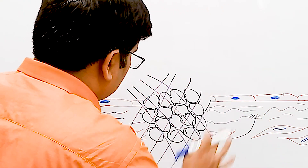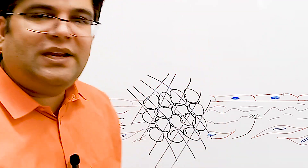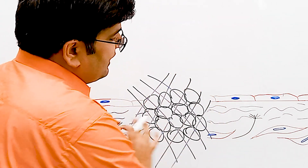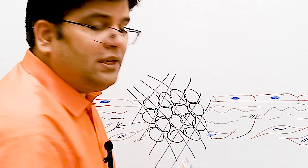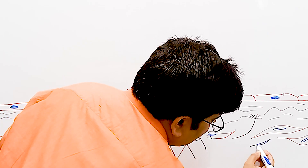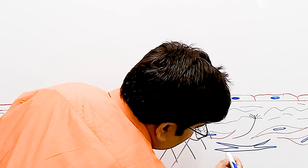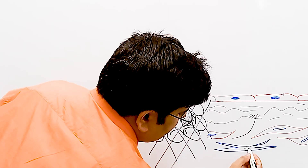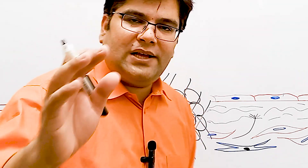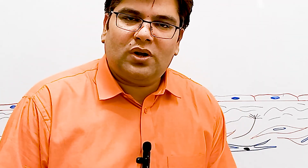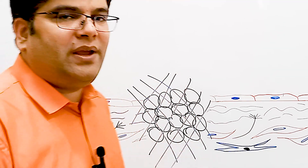It is important to note that this clot is not a permanent process to stop bleeding — it's a transient mechanism until the vessel has repaired itself. This repair of the injured vessel is done by fibroblasts, which are connective tissue cells. These fibroblasts move from the surrounding connective tissue towards the injured area. They are involved in regeneration, producing collagen fibers and making a scar to repair the vessel wall.